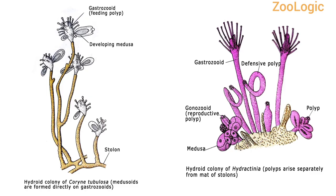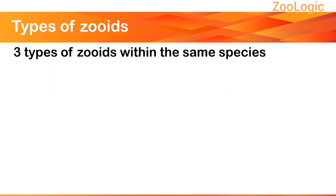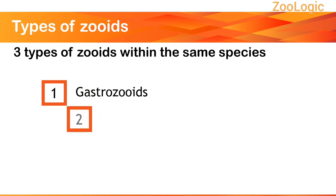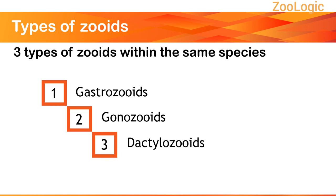Have a look at these diagrams of Coryne tubulosa and Hydractinia. Both of these are hydroid colonies having different types of zoids, which we are going to discuss now. There are three types of zoids in hydroid colonies: first, Gastrozoids; second, Gonozoids; and third, Dactylozoids.